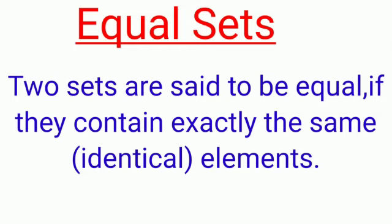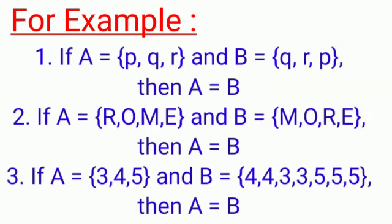For example, set A = {R, O, M, E} and set B = {M, O, R, E}. The elements are the same and the cardinal number is the same. So we can say set A equals set B.